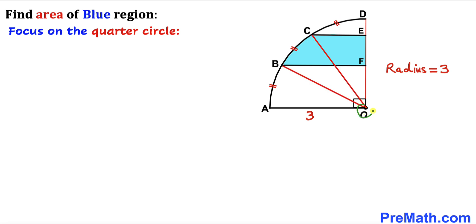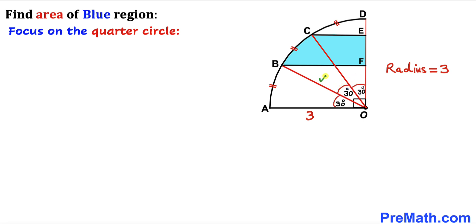In the next step I have connected center O with points B and C, so all three angles are going to be 30 degrees each, since we are dealing with equal arc lengths. OB and OC are radii of this quarter circle, so OB equals three and OC equals three units as well. These angles are going to be 90 degrees as well.